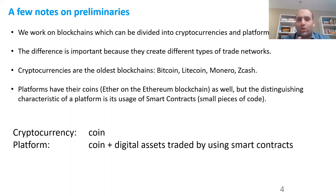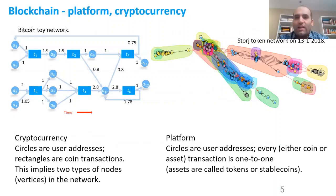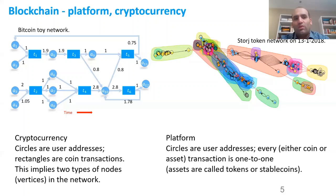To summarize: cryptocurrencies have coins, and platform blockchains have both coins and digital assets traded using smart contracts. Looking at two different network examples: on the left, the Bitcoin network has address nodes shown as circles and transaction nodes shown as blue rectangles, with Bitcoin amounts on the directed edges. For example, A1 and A2 each send one Bitcoin to transaction 1, which collects them and sends to address A5. The Bitcoin network is heterogeneous because it has both transaction nodes and address nodes.